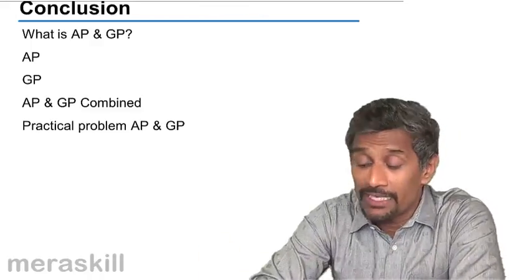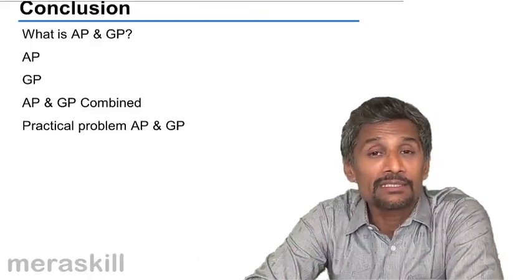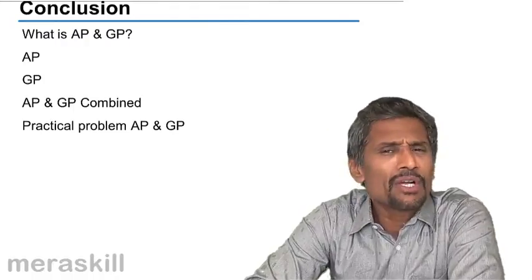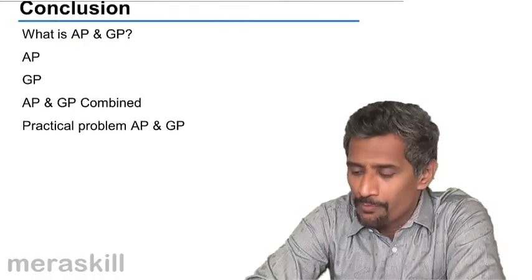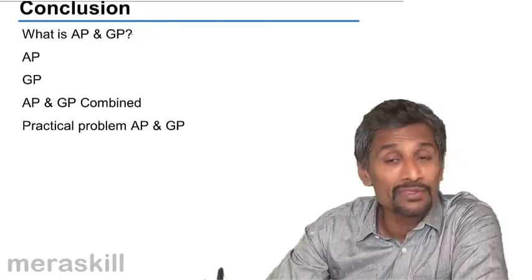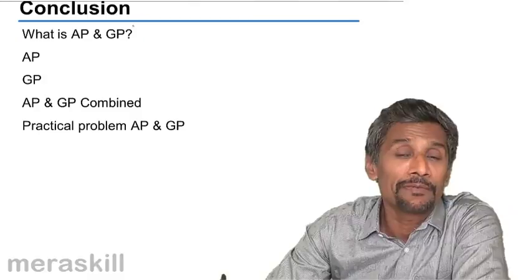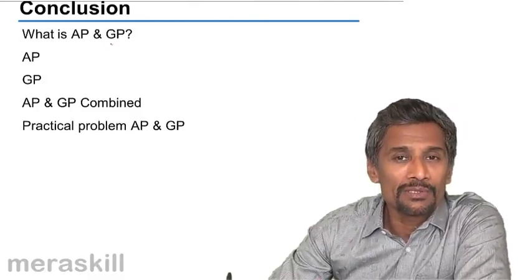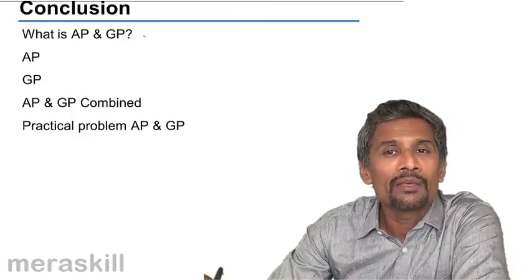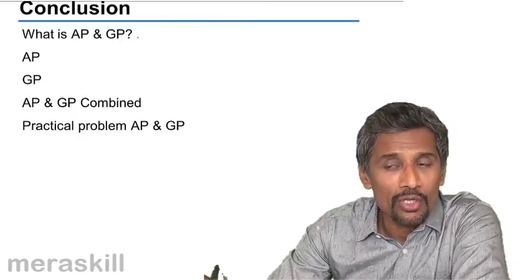So with that we complete a very interesting topic that is concerned with arithmetic progression and geometric progression. Let's give a quick bird's eye view. We did what AP and GP is. AP is a kind of situation where each term differs from the previous one by a common difference. GP, each one the ratio is constant.